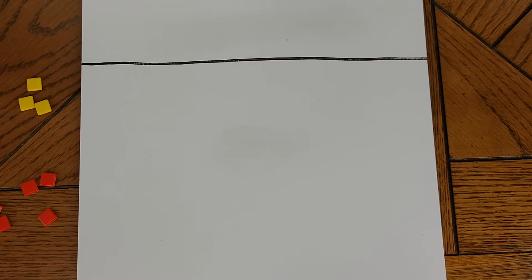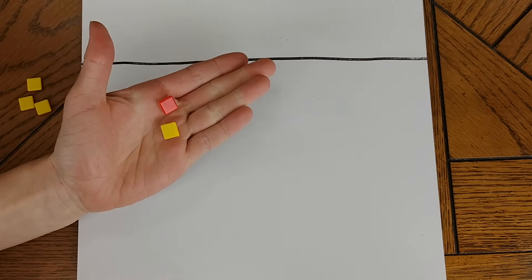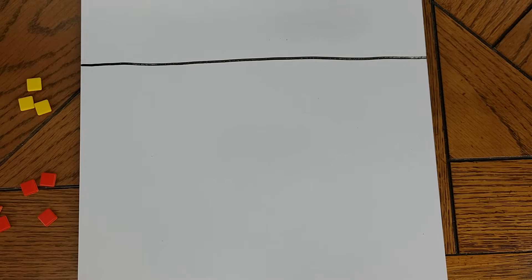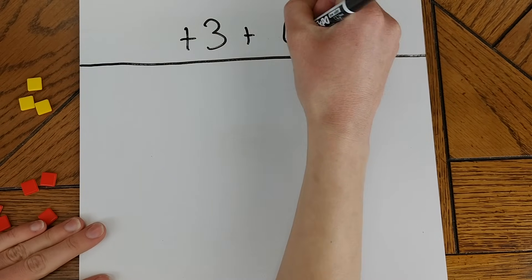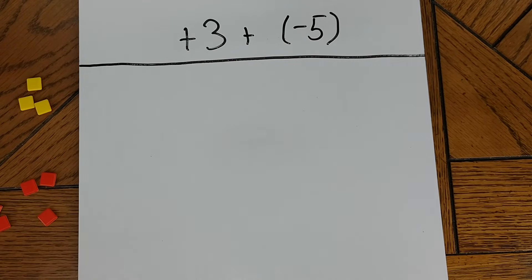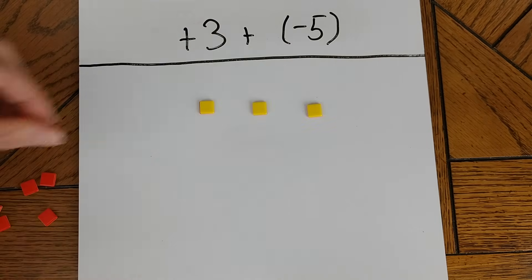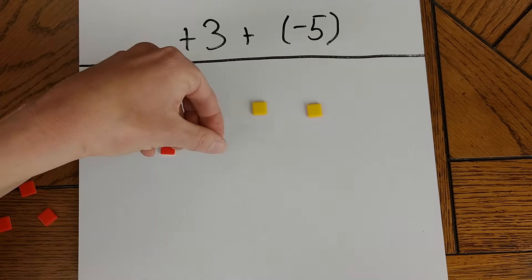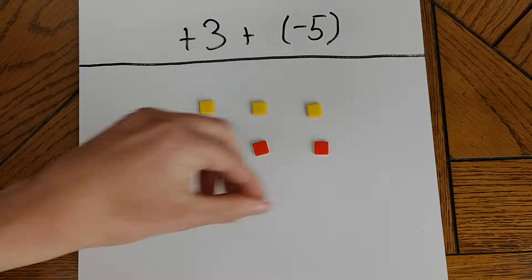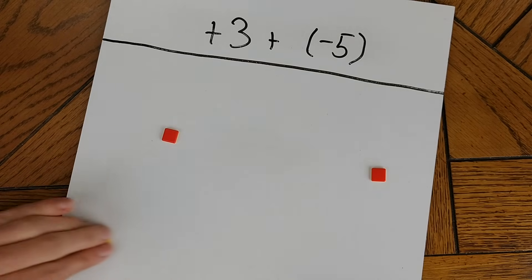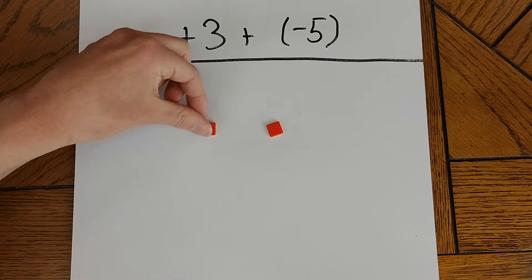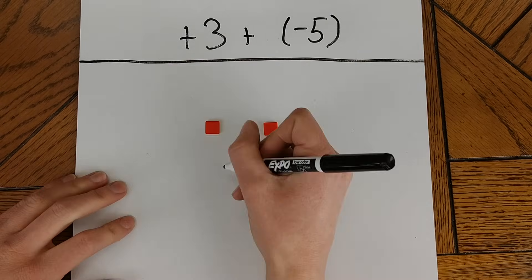Before getting into more advanced algebra concepts, these tiles can be a great tool for helping students understand operations with signed numbers. Since I'm not working with variables here, I'm only going to be using the yellow and red single unit tiles. Let's say I want to model the problem positive 3 plus negative 5. I'm going to start out by bringing in three positive yellow unit tiles to represent the positive 3, then five red negative unit tiles to represent the negative 5. Now three of these red tiles are going to pair up with three of the yellow tiles and all of that is going to get canceled out. That leaves me with just two red negative tiles — in other words, negative 2.